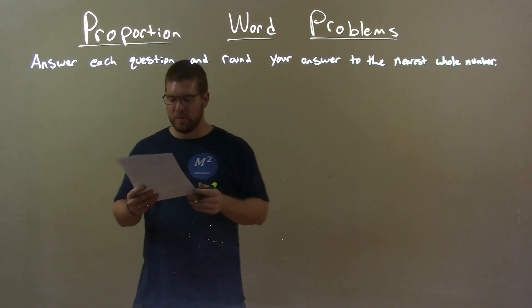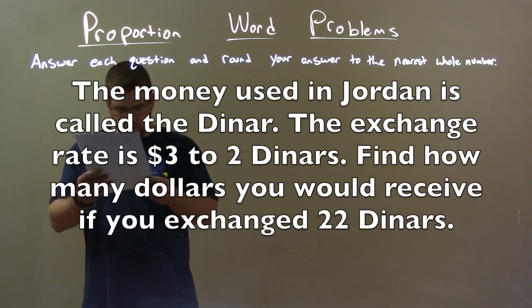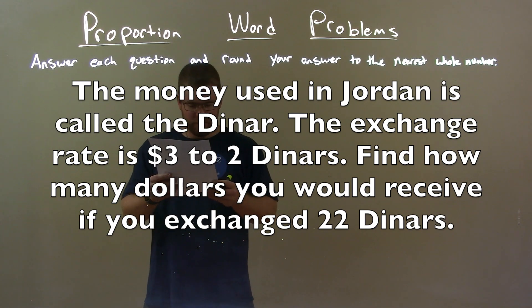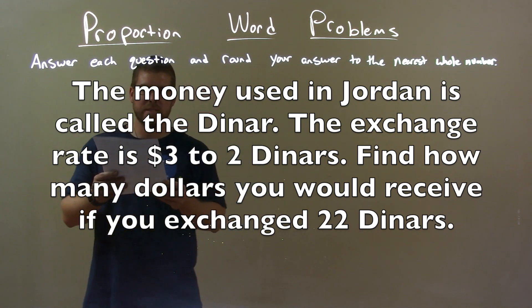If I was given this word problem, the money used in Jordan is called the dinar. The exchange rate is three dollars to two dinars. Find how many dollars you would receive if you exchanged 22 dinars.